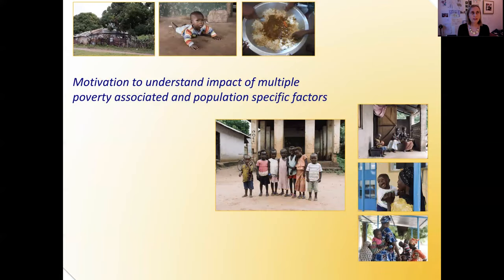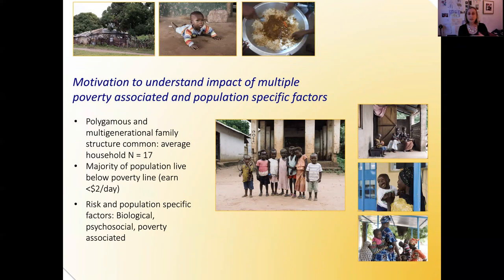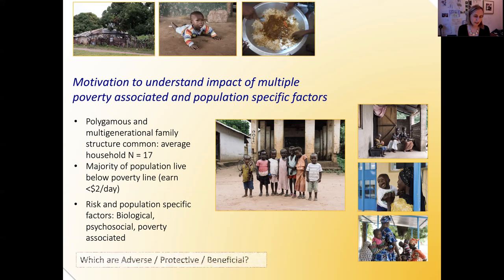We were really motivated to understand the impact of multiple poverty-associated and population-specific factors. In addition to nutritional and seasonality factors, society in this rural Gambian location often follows a polygamous and multi-generational family structure — the average household is around 17 people, ranging from two or three up to 150 or more all living within one compound. The majority of the population live below the poverty line and earn less than two dollars a day.